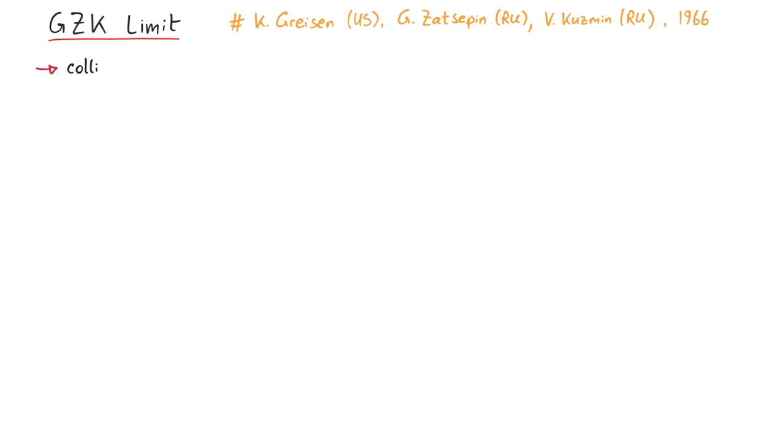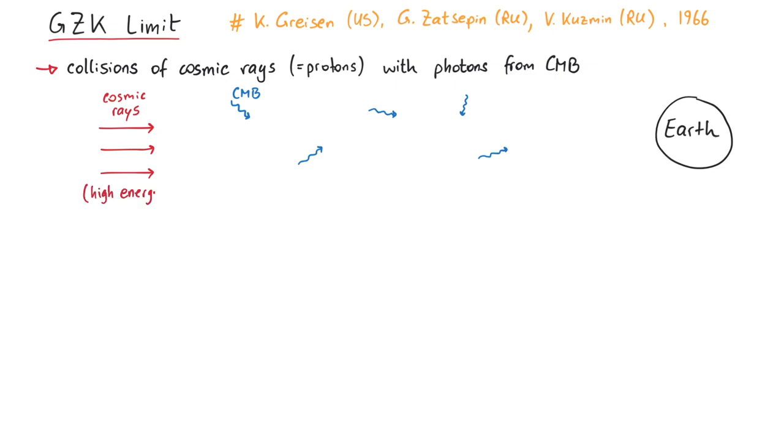In short, this energy limit is due to collisions of cosmic rays, that is protons, with photons from the cosmic microwave background radiation. Even if there are some very high energy protons far away coming towards us, they will collide with CMB photons and produce pions. This reduces the proton energy by around 20%, and this reduction of the kinetic energy happens until some specific energy is reached. This means that protons below the GZK energy limit can reach us, but those with higher energies lose their energy again by making pions along the way.